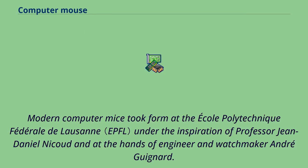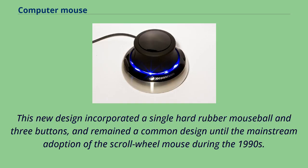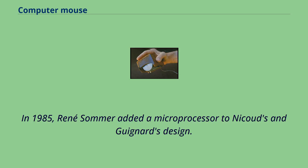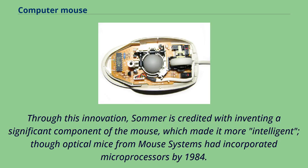Modern computer mice took form at the École Polytechnique Fédérale de Lausanne under the inspiration of Professor Jean-Daniel Nickaud and engineer and watchmaker André Guignard. This new design incorporated a single hard rubber mouse ball and three buttons, remaining a common design until the mainstream adoption of the scroll wheel mouse during the 1990s. In 1985, René Sommer added a microprocessor to Nickaud's and Guignard's design, and is credited with inventing a significant component of the mouse that made it more intelligent, though optical mice from Mouse Systems had incorporated microprocessors by 1984.